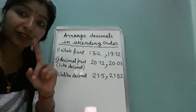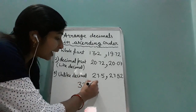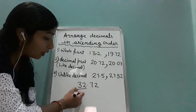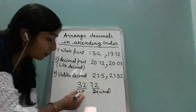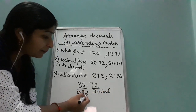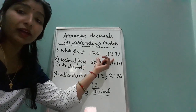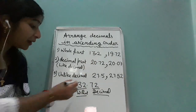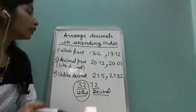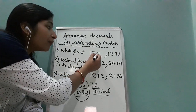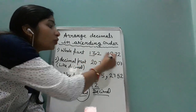The first step is: a decimal number has two parts — whole part and decimal part. So when you compare two decimal numbers, first you have to compare the whole part. Before the decimal we have the whole part, so first we will compare this whole part.